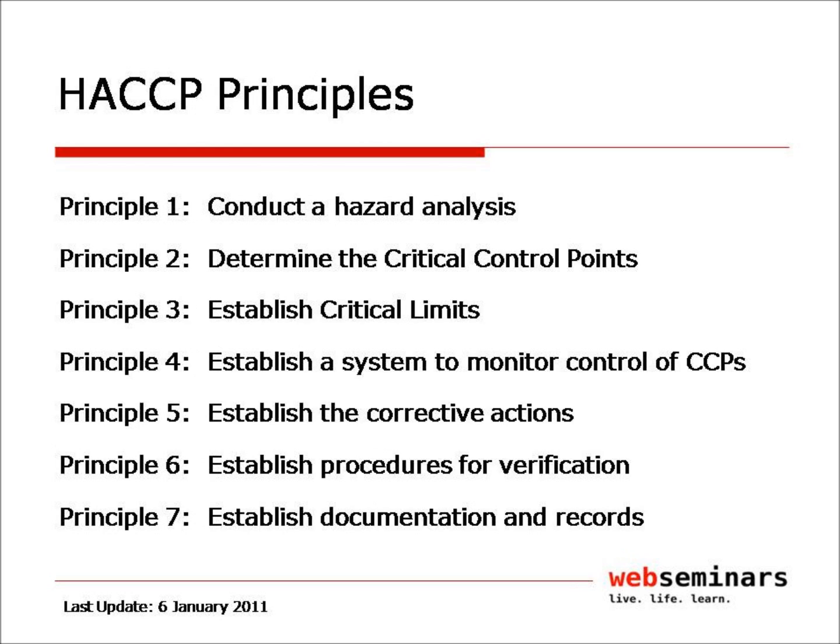There are seven principles for HACCP. These are: 1. Conduct a hazard analysis; 2. Determine the critical control points; 3. Establish critical limits; 4. Establish a system to monitor control of CCPs; 5. Establish the corrective actions; 6. Establish procedures for verification; 7. Establish documentation and records.